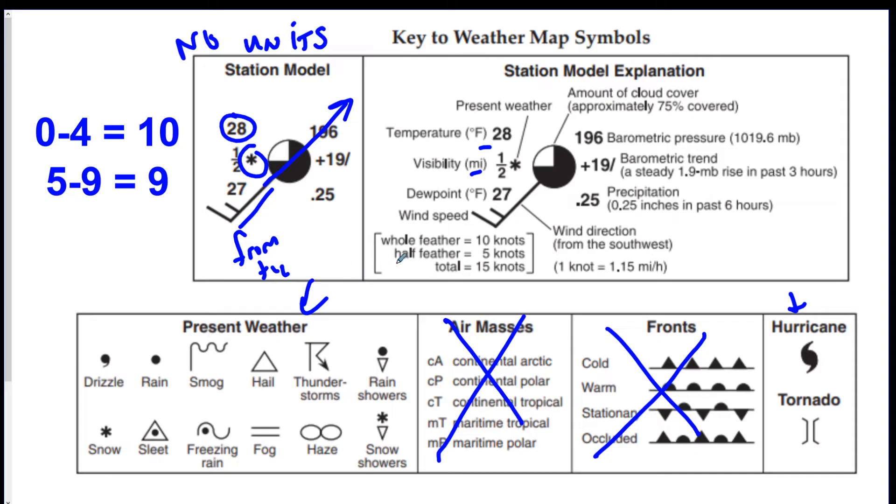How fast is it blowing? Well if you look at this right here, a whole feather is ten knots, a half a feather is five knots. So this is a whole feather and a half feather. So this is fifteen knots total wind speed from the southwest.